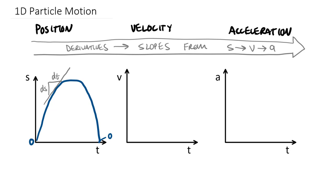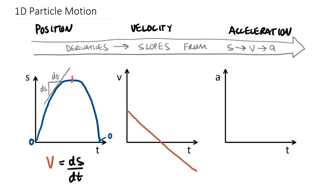We know that velocity v equals ds/dt. Assuming a quadratic position curve, the velocity will vary linearly from some maximum value at t equals zero, then reach a zero value at the top, and go negative as the slope goes negative. We can draw a hypothetical v as a function of t curve.